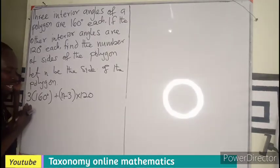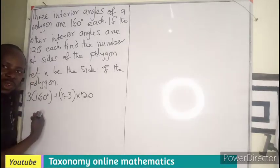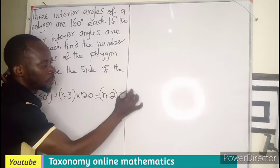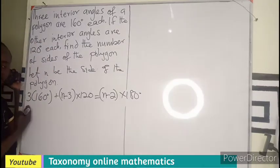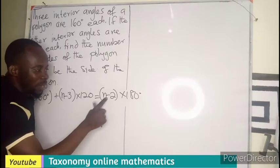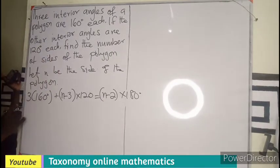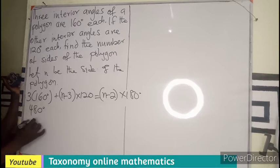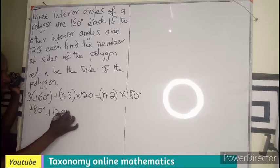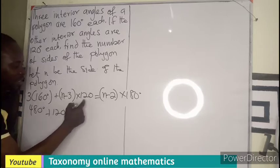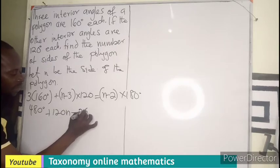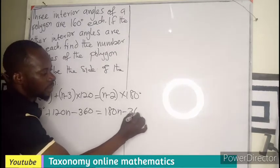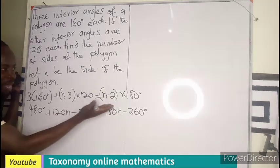What are we doing? We are trying to find the sum of the interior angle of that polygon, which is also giving us N minus two times 180 degrees. I am finding the sum. Now we are going to have this to be 480 degrees plus 120N, then minus, this is going to be 360 equals to 180N minus 360 degrees.